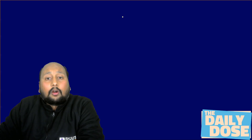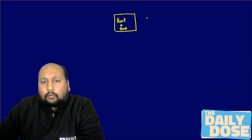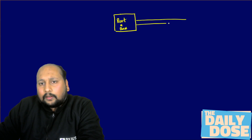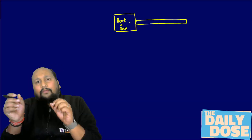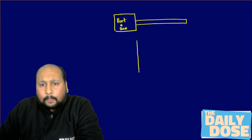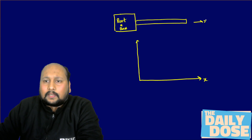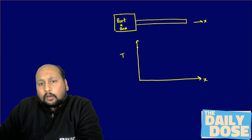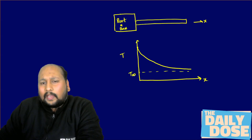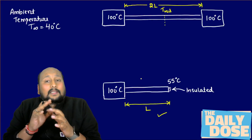Recalling the basic concept of fins: attached to a root or base material, a fin always shows a temperature that decreases in an exponential way. If we draw the temperature distribution along the length of the rod — x on the horizontal axis, temperature on the vertical — it always follows a negative exponential distribution. This temperature profile applies whether the tip is insulated, uninsulated, or infinitely long.